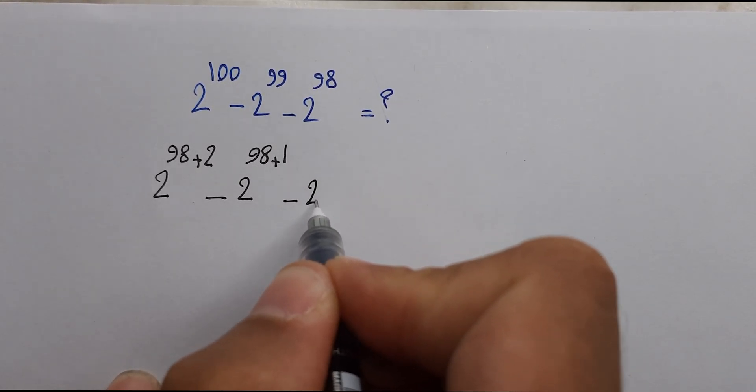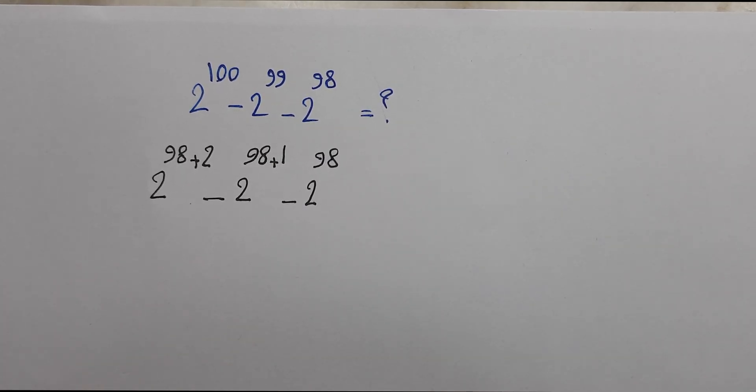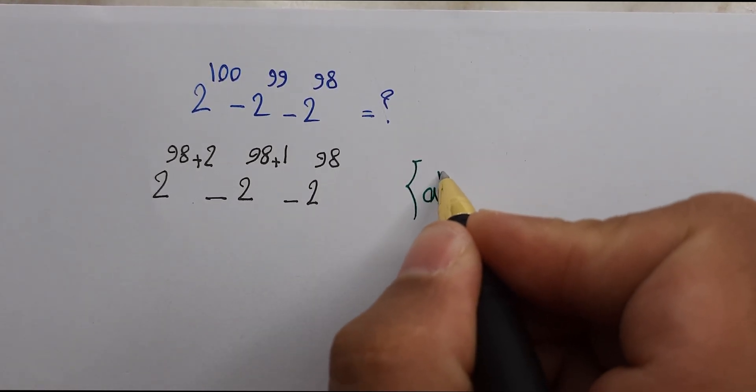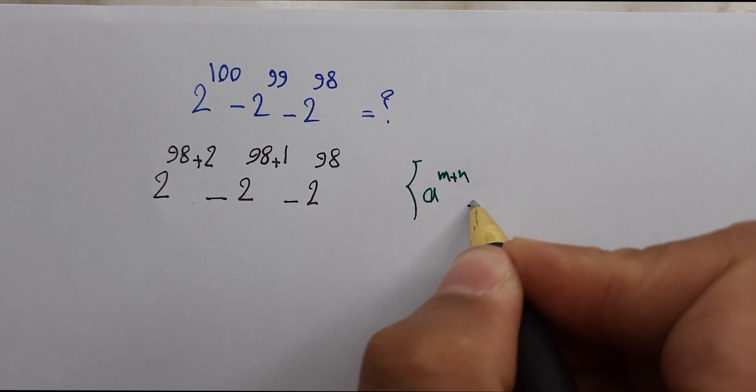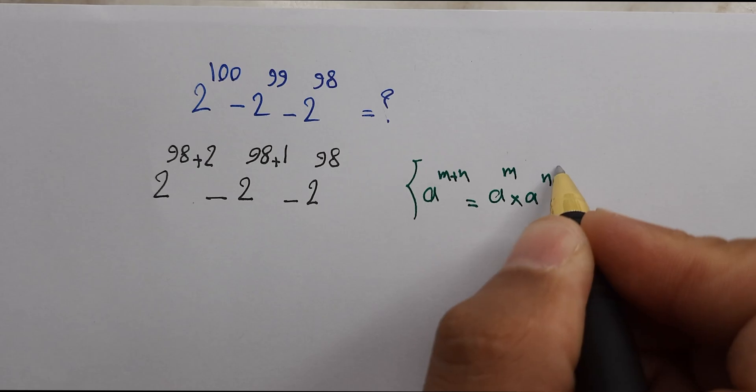And we have 2 power 98. As you know, we have an identity that a power m plus n is equals a power m times a power n.